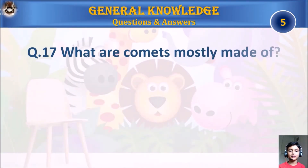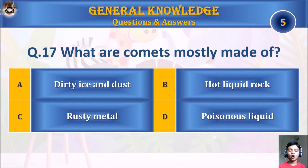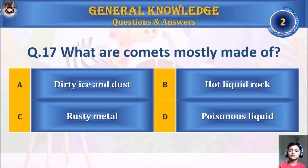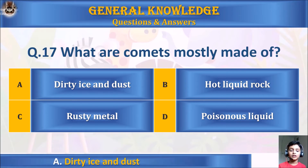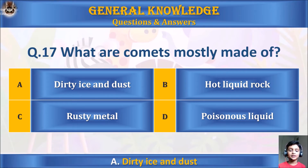Question 17: What are comets mostly made of? A. Dirty ice and dust, B. Hot liquid rock, C. Rusty metal, or D. Poisonous liquid. Your time starts. The answer is A. Dirty ice and dust.